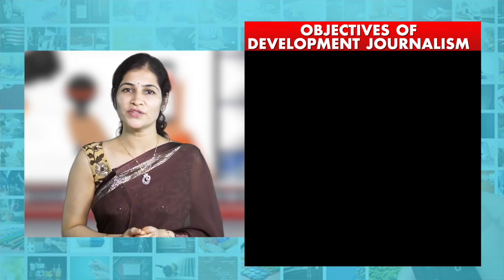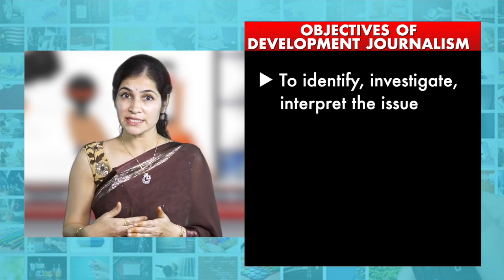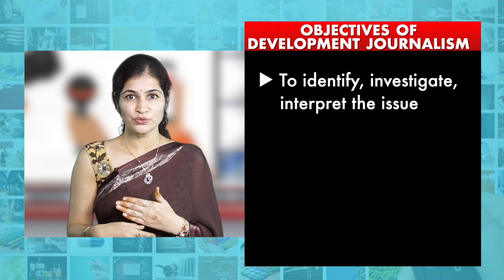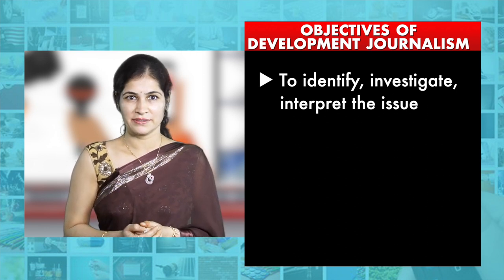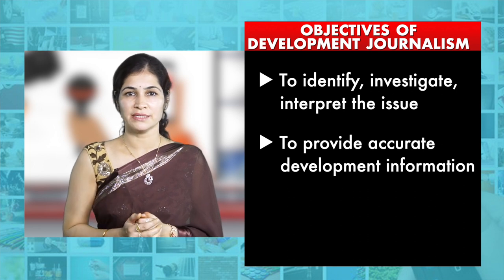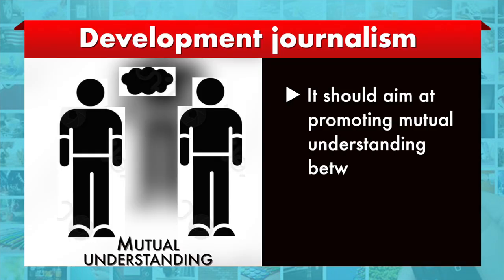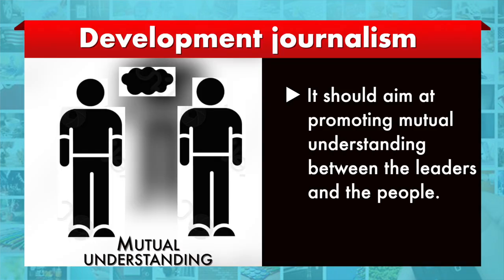The major objectives of development journalism are to identify, investigate, and interpret the issue and its bearing on the society. To provide accurate development information that facilitates the development process. It should aim at promoting mutual understanding between the leaders and the people by carrying policy and other messages of the state to the people and relaying people's needs and aspirations to the state.